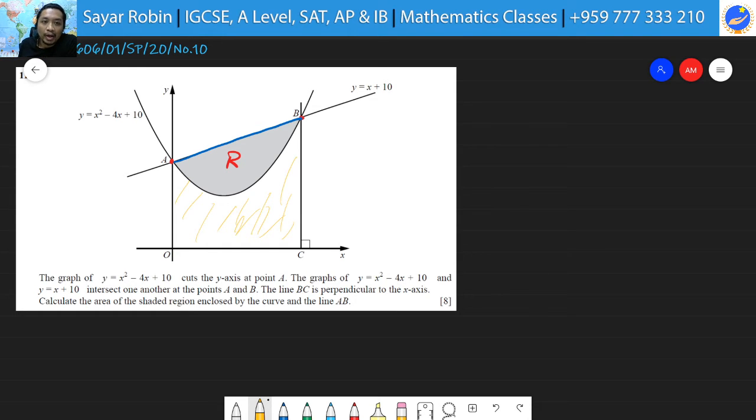We just need to find the coordinates of B. That's why we equate the quadratic equation and the linear equation. So, x squared minus 4x plus 10 must be equal to x plus 10. This is linear, this is quadratic. Fortunately, we can directly delete the constant term and then x squared minus 4x minus x is equal to 0. Now, x squared minus 5x.